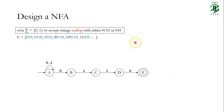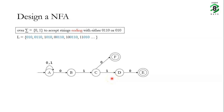Now let's add the capability to accept 0110. From the initial state, if we receive 0 then 1 we go to state c. If we receive 1 in state c we go to state d, but if we receive 0 in state c let's take it to another final state f. So if the NFA receives 010 it goes to final state f. This completes the NFA which accepts strings ending with 0110 or 010.